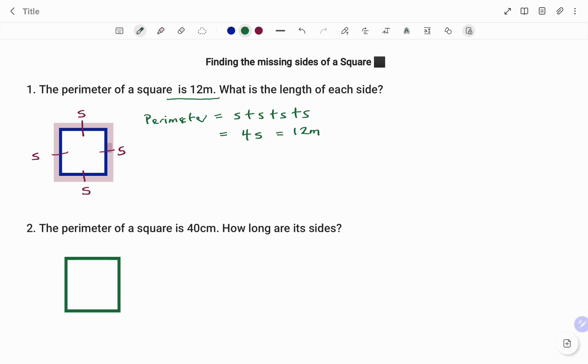To find S, I'm going to divide both sides by 4. Remember, whatever you're doing on the right, you're doing on your left. We have 4 divided by 4, 1. So therefore, S is equal to 12 divided by 4, 3 meters. So therefore, the square shown with a perimeter of 12 meters, all the sides will be 3 meters.